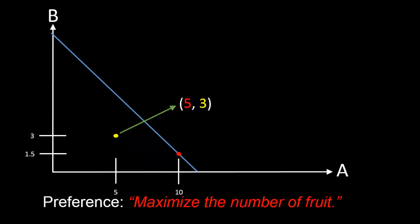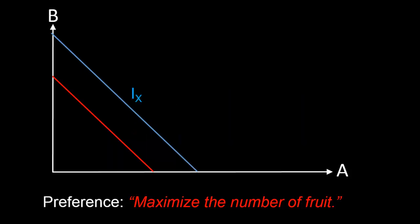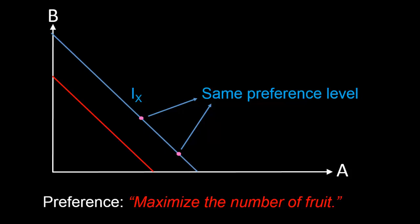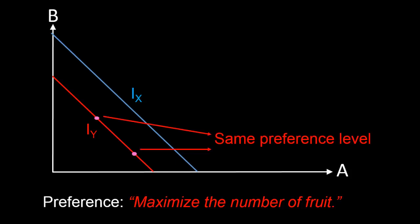So we started off with the yellow bundle, asked what the indifference curve running through it looks like, and proceeded to construct it — it's just a straight downward-sloping red line. I'm now going to label the first indifference curve ix. If I pick any two bundles on ix, I can say they have the same preference level x — Chris is indifferent between them and equally prefers one to the other. Similarly, I can label the second indifference curve iy. Any two bundles on iy share the same preference level y — Chris equally prefers one to the other.